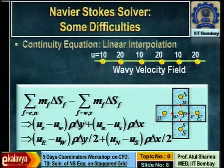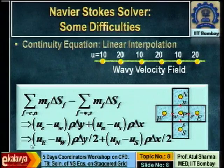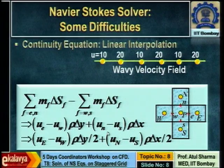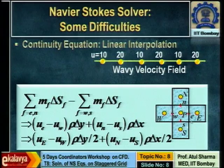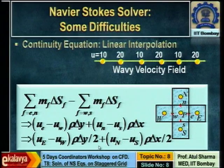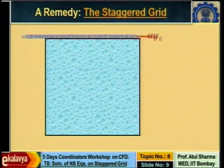Not only do we avoid interpolation for pressure, but even for velocity: in the continuity equation, if you do linear interpolation for mass fluxes, then u at node P does not come into the expression. You are discretizing mass conservation of a particular control volume and the velocity at that node does not enter the expression. This causes pressure-velocity decoupling. The basic idea is to avoid interpolation for mass fluxes and pressure at face centers — that is the staggered grid.